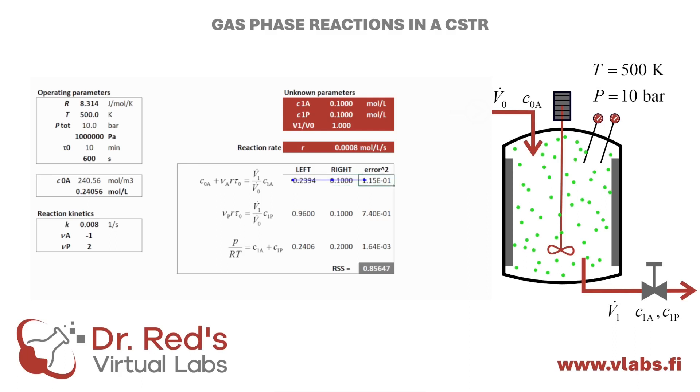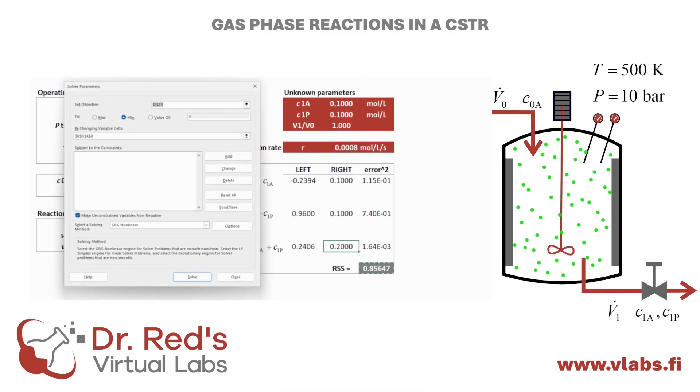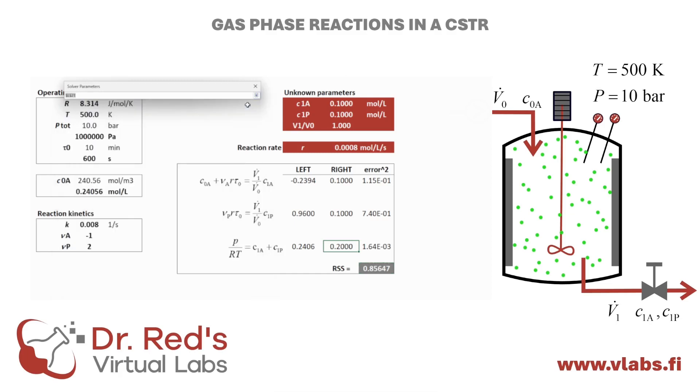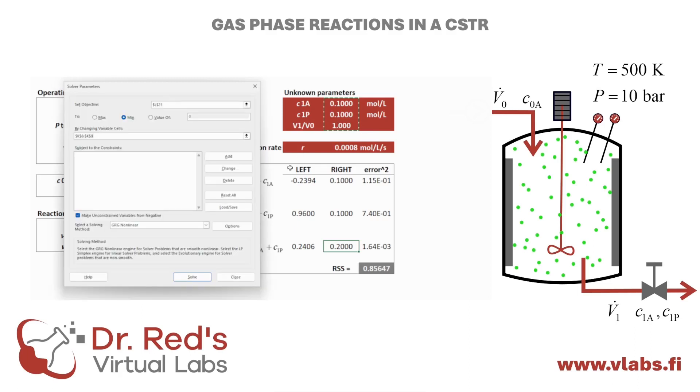We'll use Excel Solver to minimize the difference between the left and right sides. The error is squared to ensure it's always positive. Configuring Excel Solver is straightforward. We select the sum of the errors from all three equations as the objective function to minimize. The cells Excel modifies are the unknown parameters. No extra constraints are necessary for this simple system.